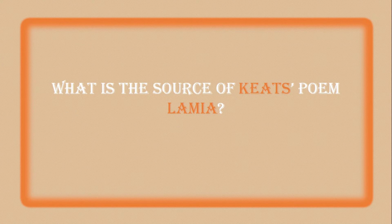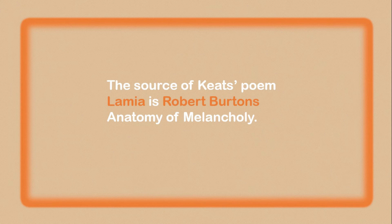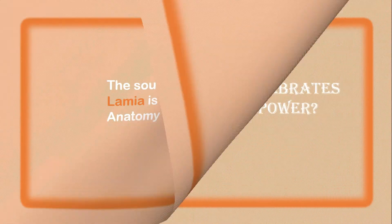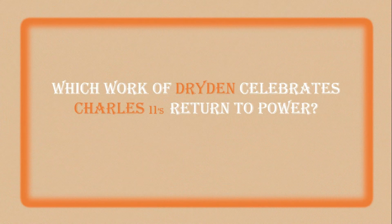Question 2: What is the source of Keats' poem Lamia? The source of Keats' poem Lamia is Robert Burton's Anatomy of Melancholy. Question 3: Which work of Dryden celebrates Charles II's return to power?